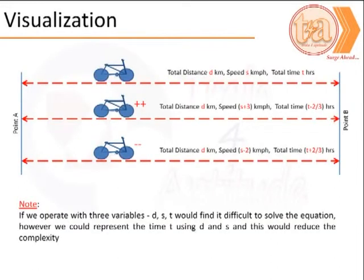We could visualize the problem as shown. We assume here that Suraj is moving on a cycle and the distance between point A and B is d km. He travels at his initial speed of s km per hour and takes t hours to complete the journey.